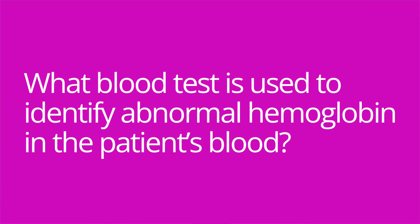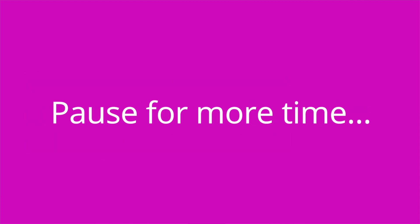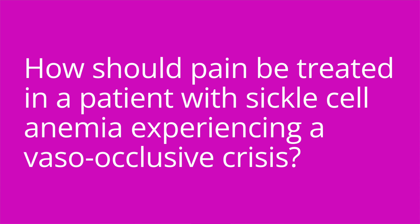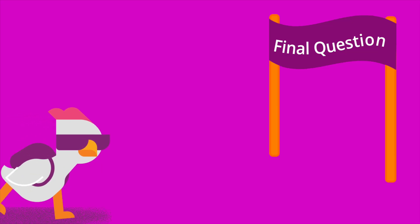It's quiz time — I have three questions for you. Question number one: what blood test is used to identify abnormal hemoglobin in the patient's blood? The answer is hemoglobin electrophoresis. Question number two: how should pain be treated in a patient with sickle cell anemia experiencing a vaso-occlusive crisis? The answer is with opioid analgesics given on a schedule.